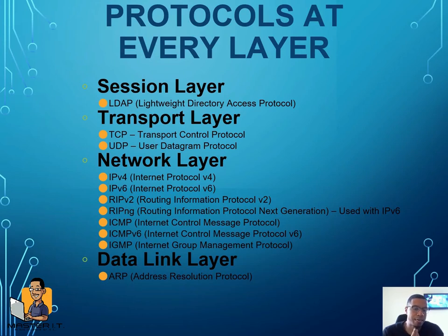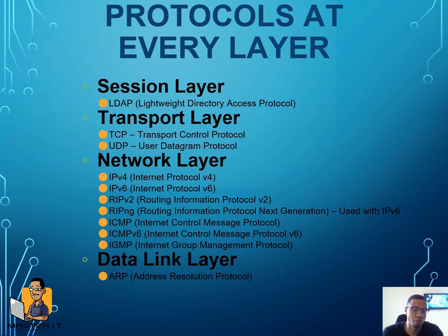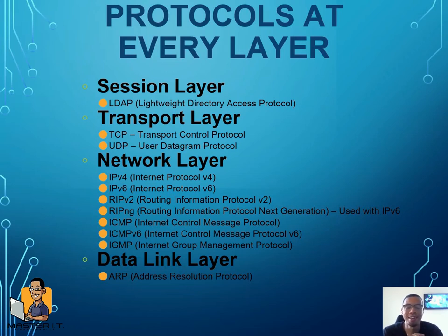The data link layer is layer two, and the device that works there is a switch. So layer three has routers, layer two has switches. A protocol that works at layer two is ARP — the Address Resolution Protocol. So layer three is routers and layer two is switches.